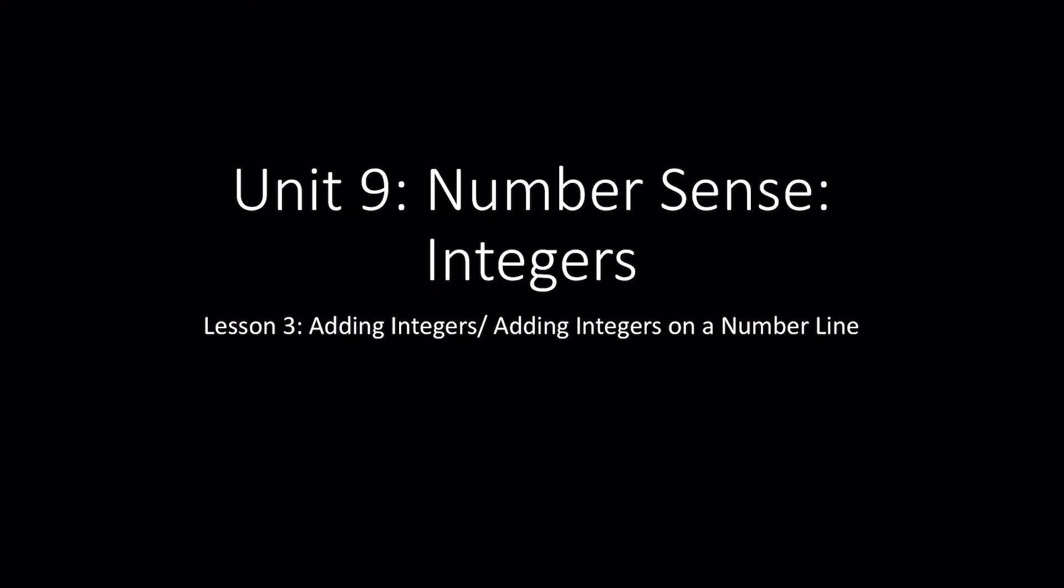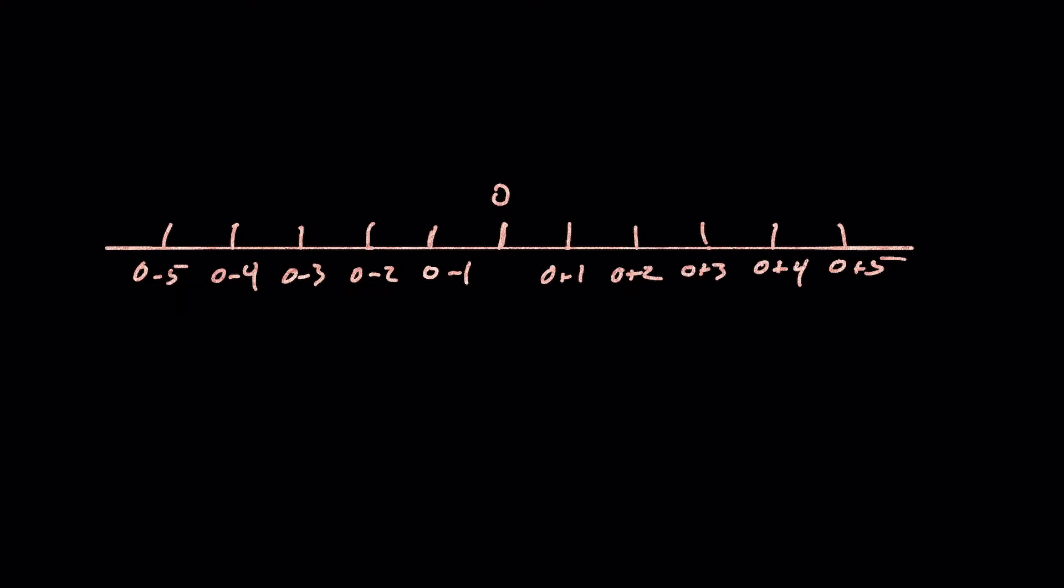Alright, welcome back. We are adding integers now. So if I look at this number line, something we've already gone over, I'm looking at this first position. It's 0 plus 1, this would be 0 minus 1, 0 minus 2, 0 minus 3. And how we would write that is just negative 1, negative 2, negative 3.